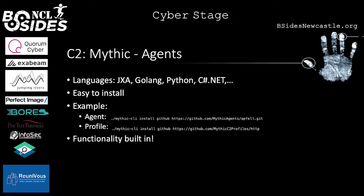How does Mythic actually work? Instead of stagers like Empire, Mythic uses agents made in different languages — such as JXA (a version of JavaScript for macOS), Go, Python, and C#/.NET. They're quite easy to install. For example you can use the command line to install the Apollo agent for macOS, or install profiles for HTTP, DNS, and so on. All agents are separate Docker containers that plug into the Mythic framework, which enables the plug-and-play modularity that makes it easy to use.